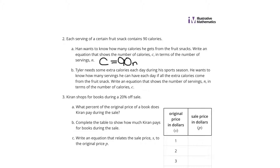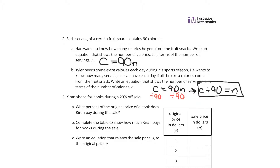Write an equation that shows the number of servings, N, in terms of calories, C. If we take the original equation C equals 90N and solve for N, we divide by 90 on both sides — because division is the opposite of multiplication — and you get C divided by 90 equals N. So the number of servings you've had is how many calories you've had divided by 90.